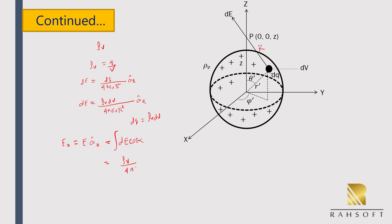EZ is equal to the integral of dE·aZ, which equals the integral of dE cos α. So EZ equals the integral of ρV dV divided by 4π ε₀ R² times cos α, where dV is the differential volume element in cylindrical coordinates, as already shown in the starting lectures of this course.